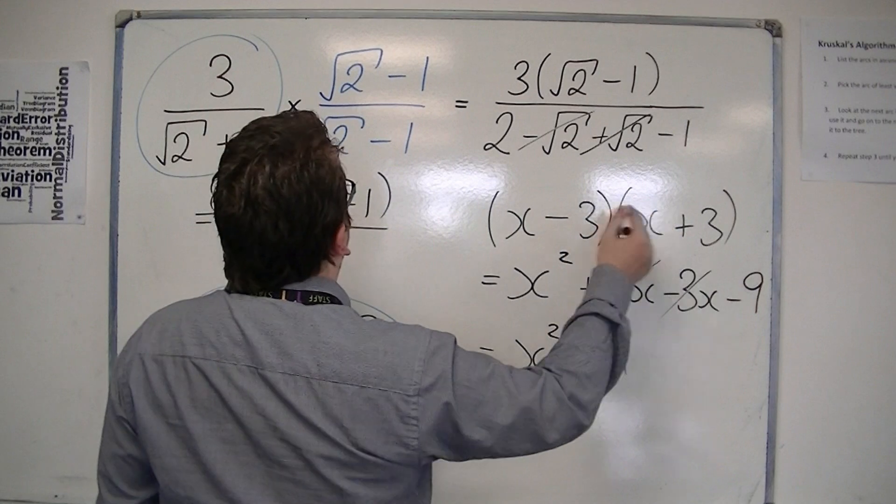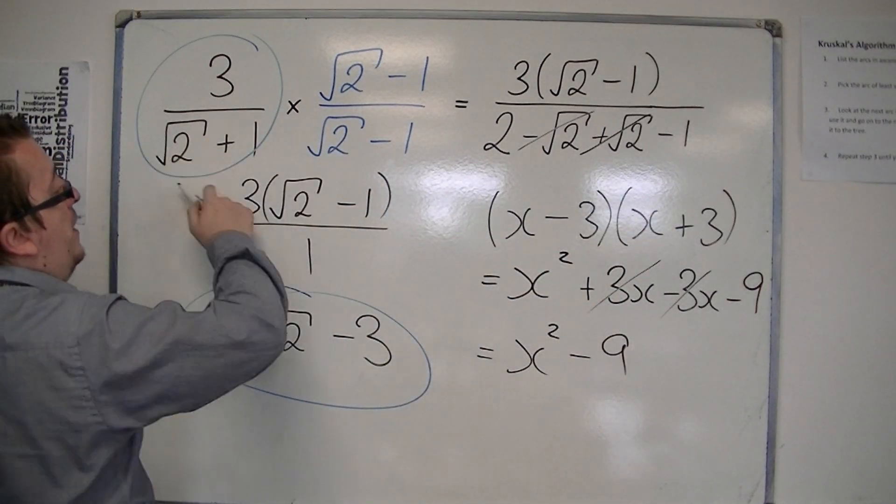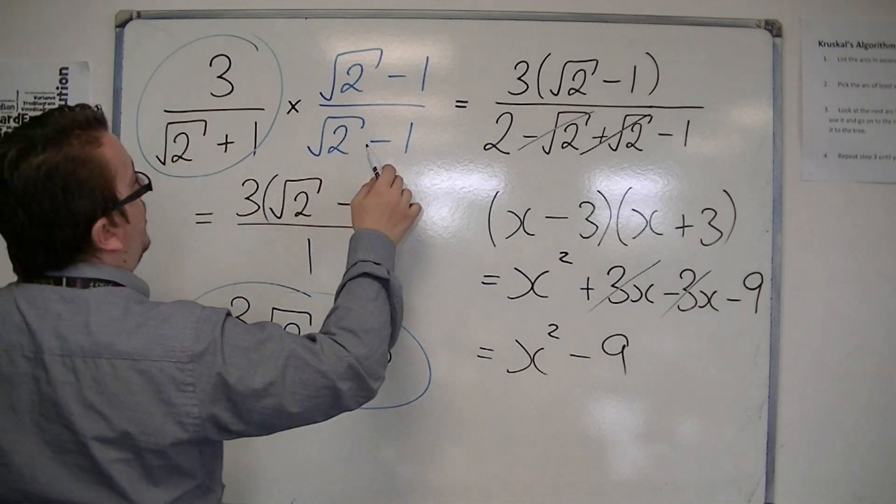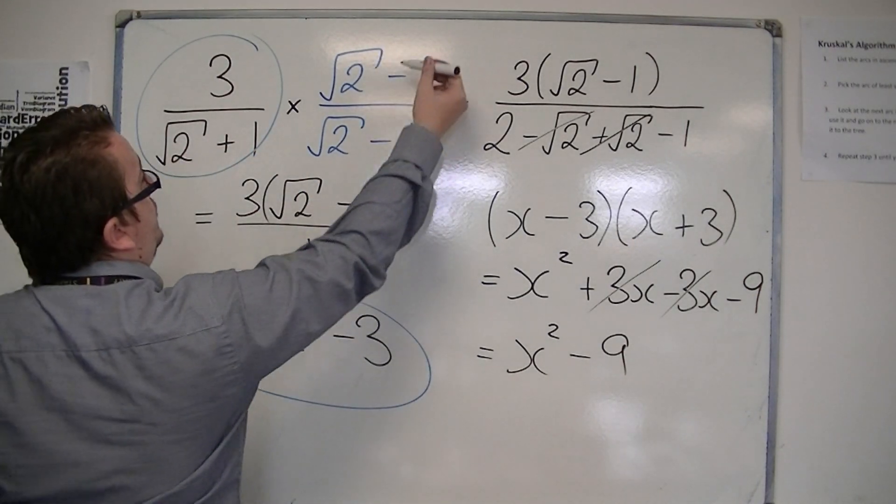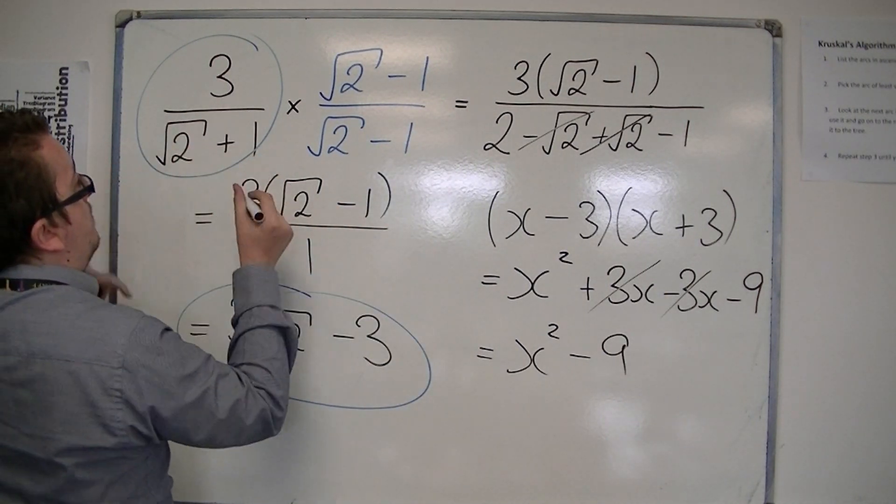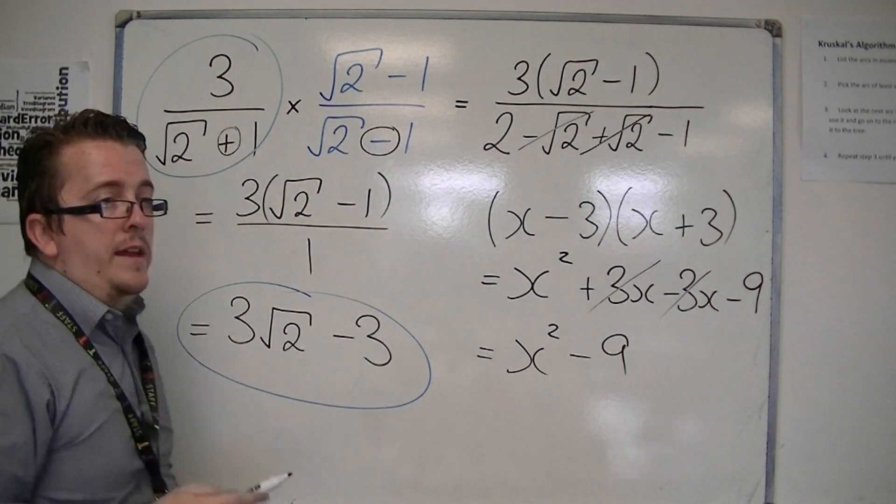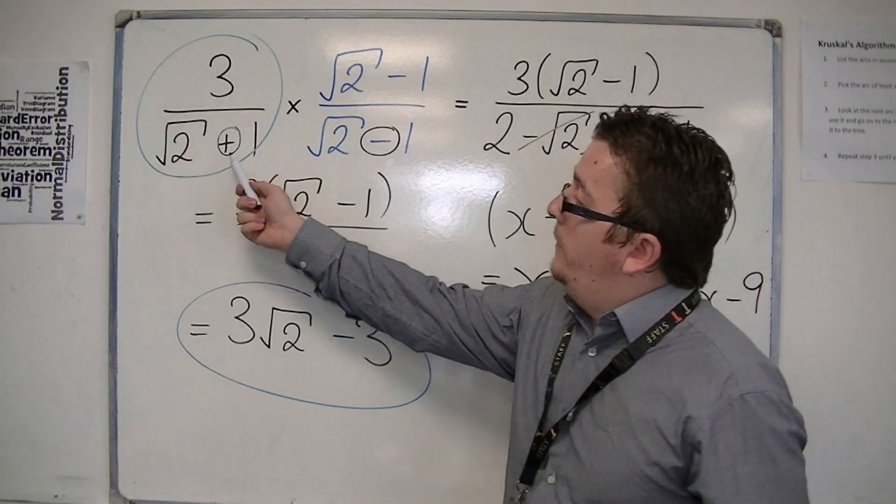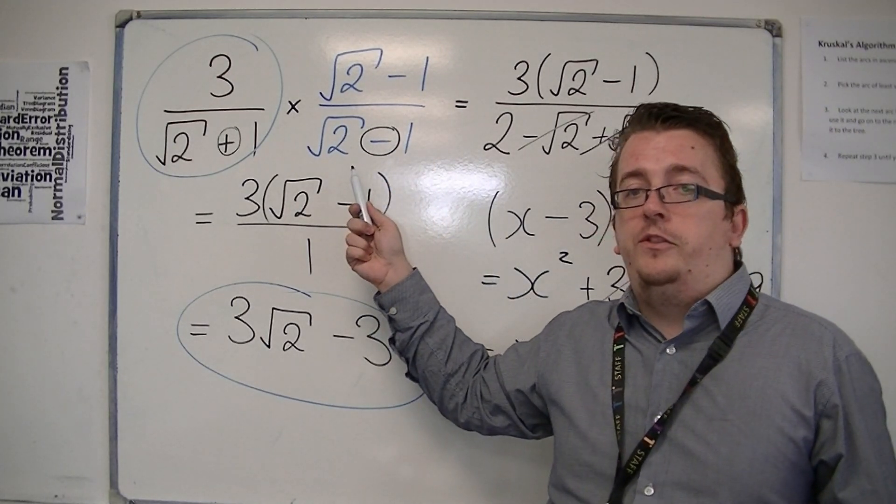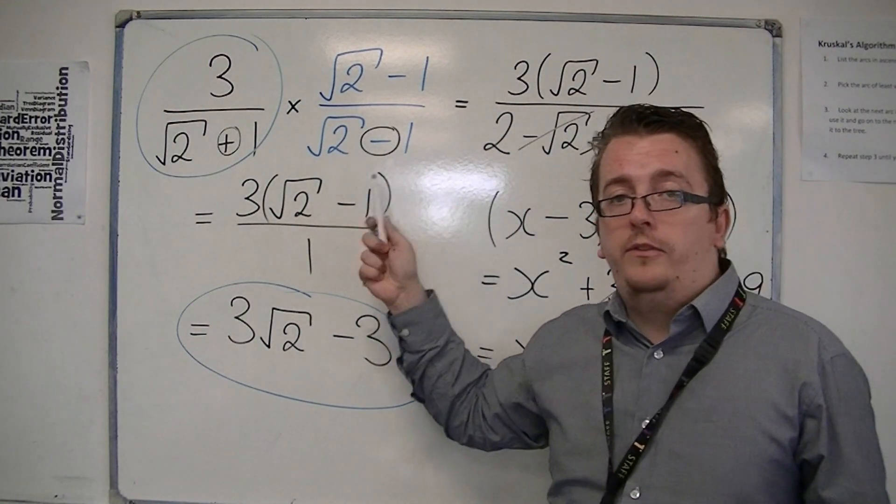So what you want to do every single time that you have this, or something similar on the denominator, is you multiply it by a fraction top and bottom that is exactly the same thing, but you've changed the sign. So if this starts with a plus, then you want to multiply with something that is a minus between the two terms. If it were a minus, you need to multiply by a plus.